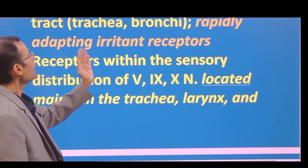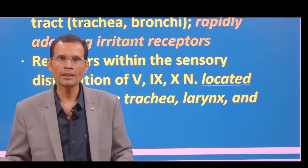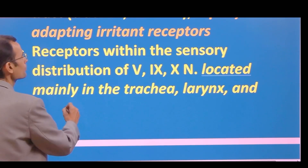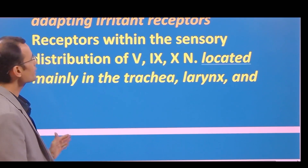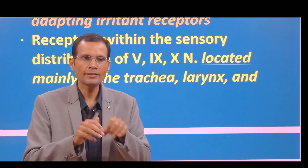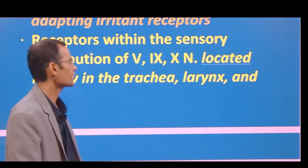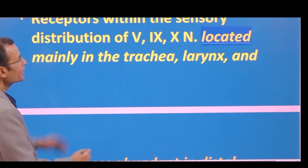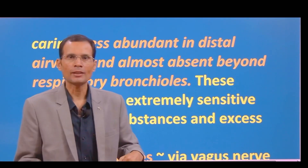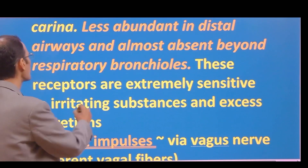These are rapidly adapting irritant receptors. Receptors are of two types — slowly adapting and rapidly adapting — and these are rapidly adapting irritant receptors. They are located within the sensory distribution of the fifth, ninth, and tenth cranial nerves. Whenever those sensory distribution areas are stimulated, it can result in the cough reflex. They are located mainly in the trachea, larynx, and carina, less abundant in the distal airways, and absent beyond the respiratory bronchioles.